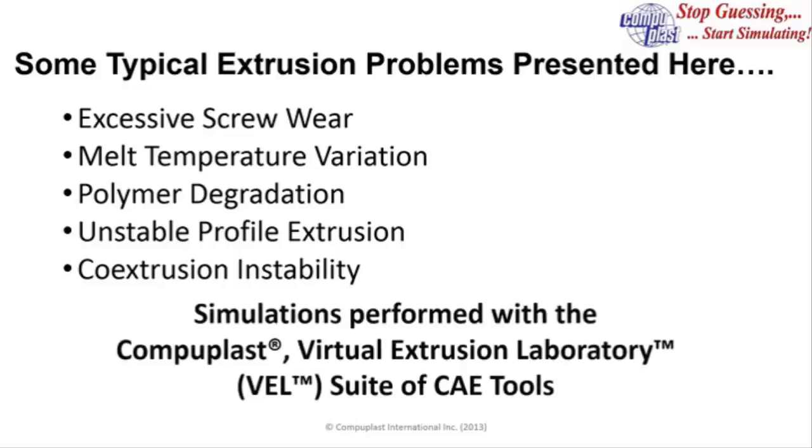Now, the simulation that we use is the CompuPlast Virtual Extrusion Laboratory suite of CAE tools. It consists of about 12 modules, each developed to simulate a specific component in the extrusion process. So, for example, we have an extruder module, we have several die modules, a cooling module. And by doing it in the module approach, it makes the software easier to use and much more efficient for the user to come up with an optimized solution.